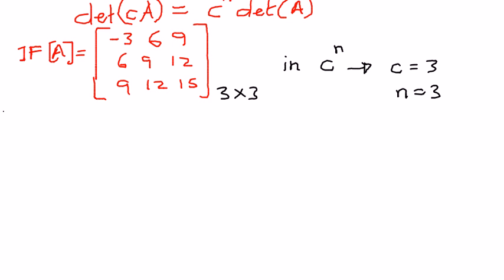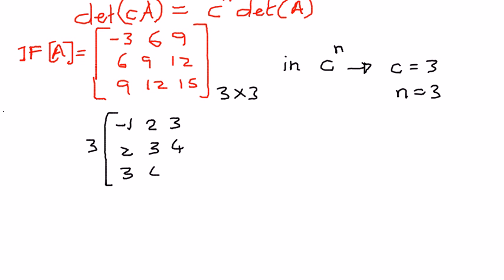If we inspect this matrix, all the elements are multiples of 3. So if we pull 3 out and rewrite this matrix, it becomes 3 times the matrix with elements: negative 1, 2, 3 in the first row; 2, 3, 4 in the second row; and 3, 4, 5 in the third row. We have pulled out a common factor of 3 from every element, and the value of c is 3. The value of n is the number of rows, which is 3.